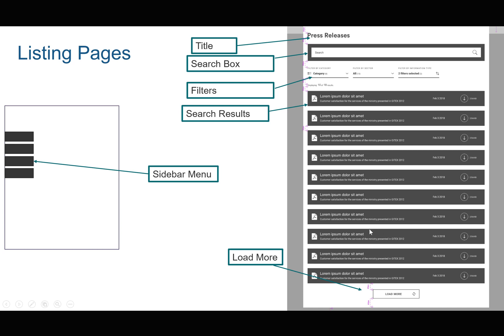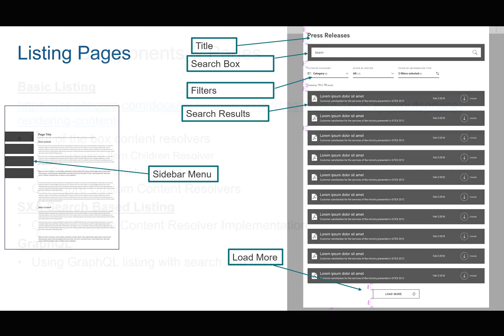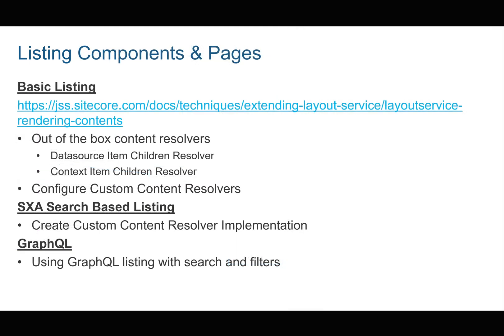There are three ways to create listing pages in SiteCore. These are: basic listing, SXA search-based listing, and GraphQL. The first one is basic listing, and this is really utilizing the out-of-the-box content resolvers.